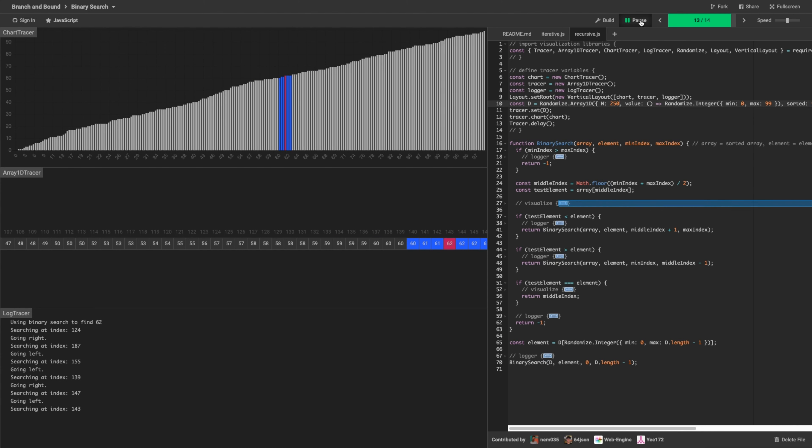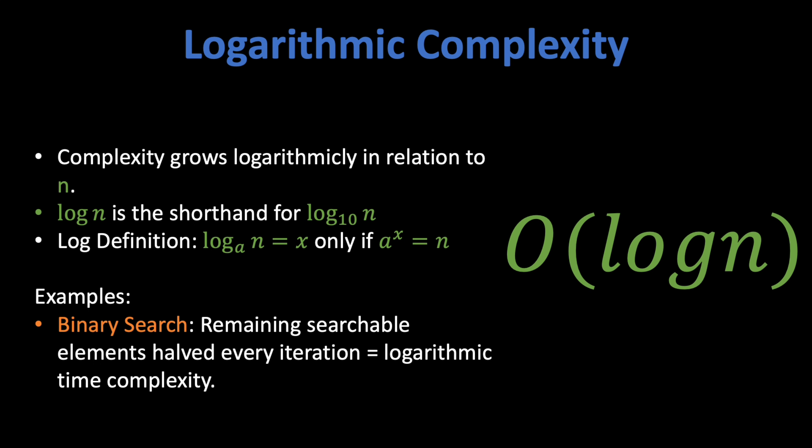As a result, we will discard half of the remaining elements on each iteration, which will give you a log base 2 of n time complexity in the worst case scenario, where n is the number of elements in the array. As I said, in big O notation, we do not care about the base of the logarithms. So we denote the time complexity of a binary search as just O(log n).